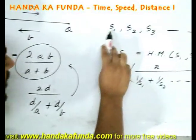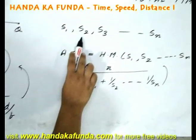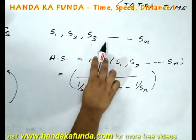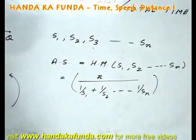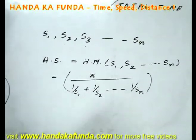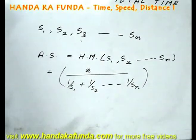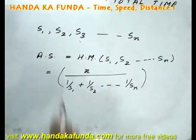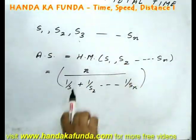So, if a person goes with the speed of S1, comes back with S2, goes again with S3, comes back with S4 and the process goes on till SN. That is, if the same distance is covered at various different speeds, then the average speed is not the arithmetic mean.